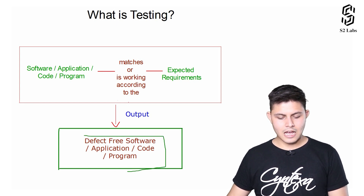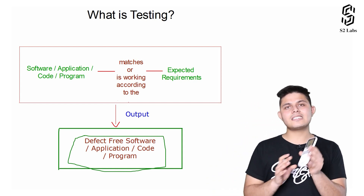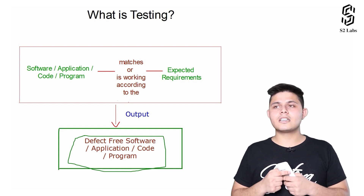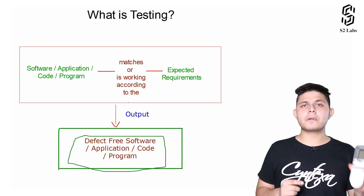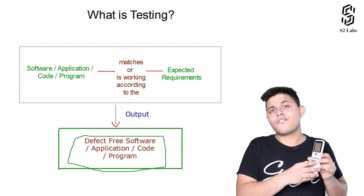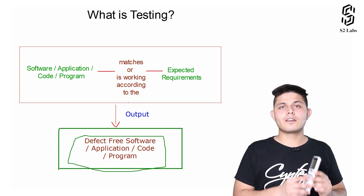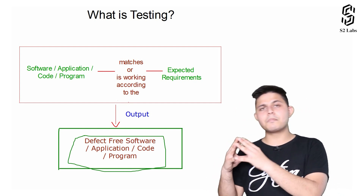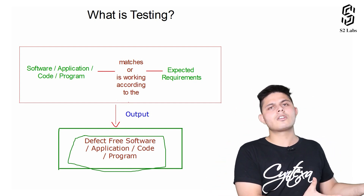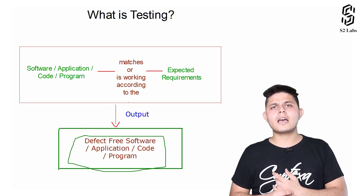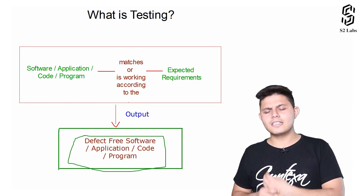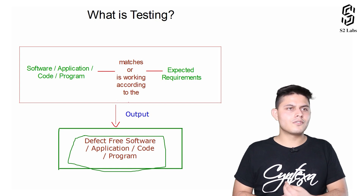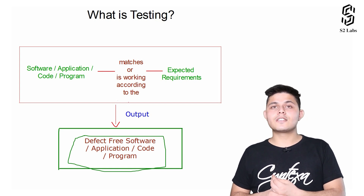The output of testing is a defect-free software, application, code, or program. If I test the remote or the calculator thoroughly and ensure there are no errors, I'll end up with a product that is defect-free and works according to expected requirements only. Testing happens in all fields — products, software, applications, systems — and it is really very important to test whatever you are creating or developing.